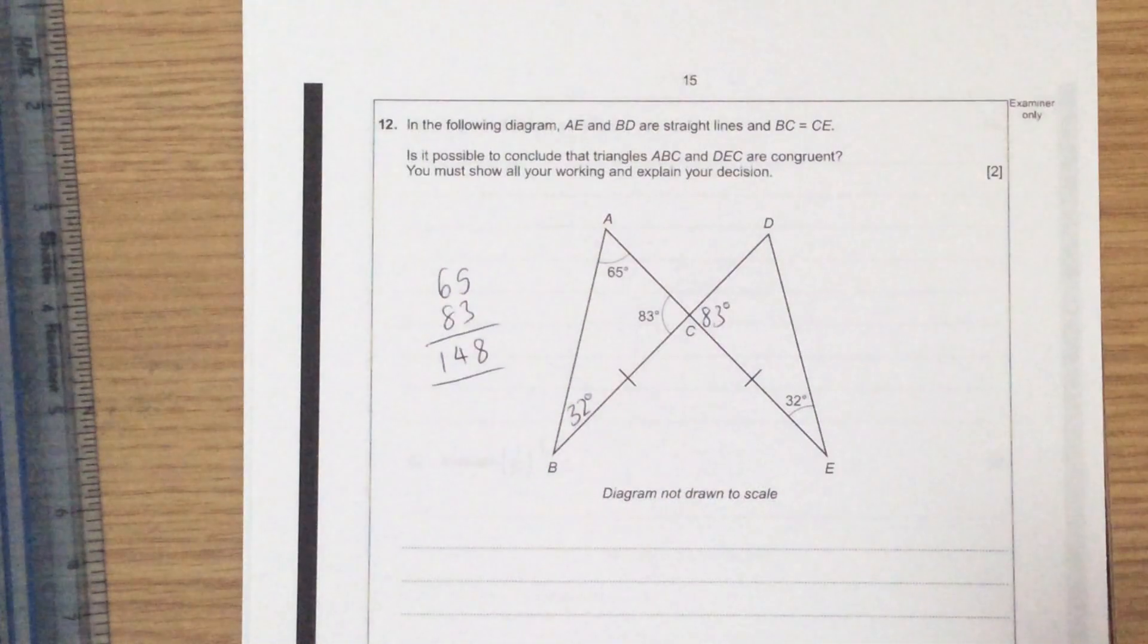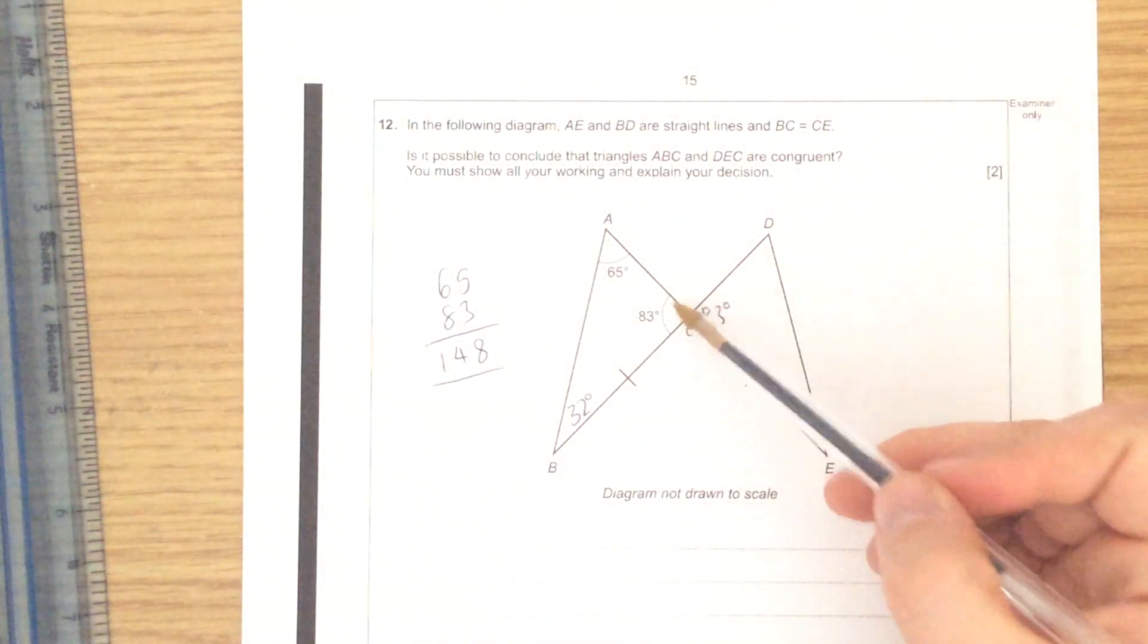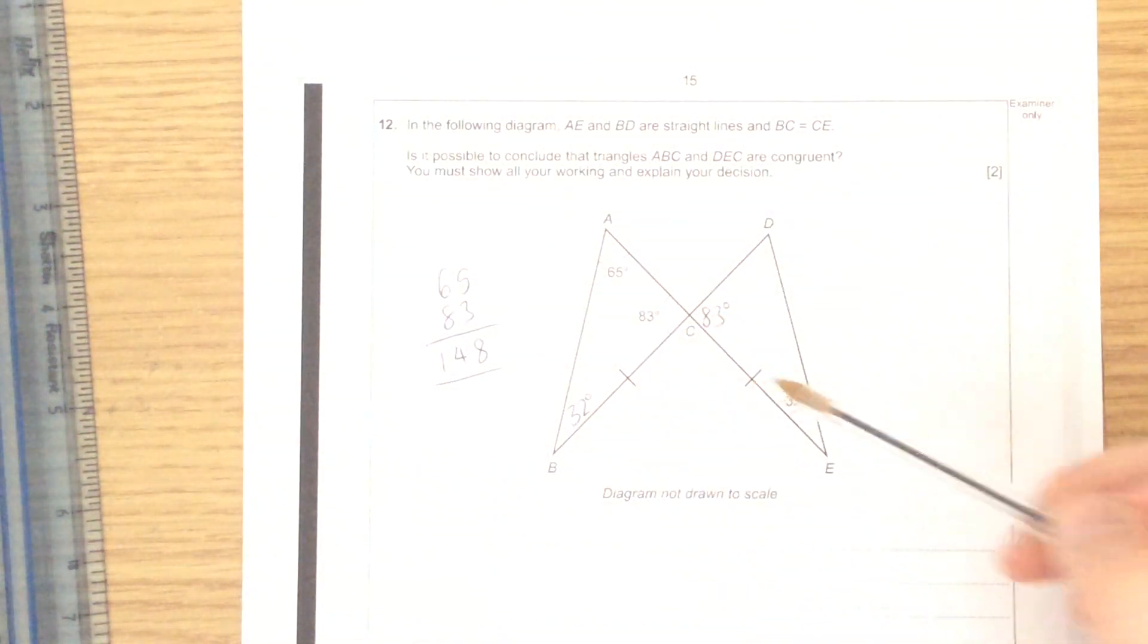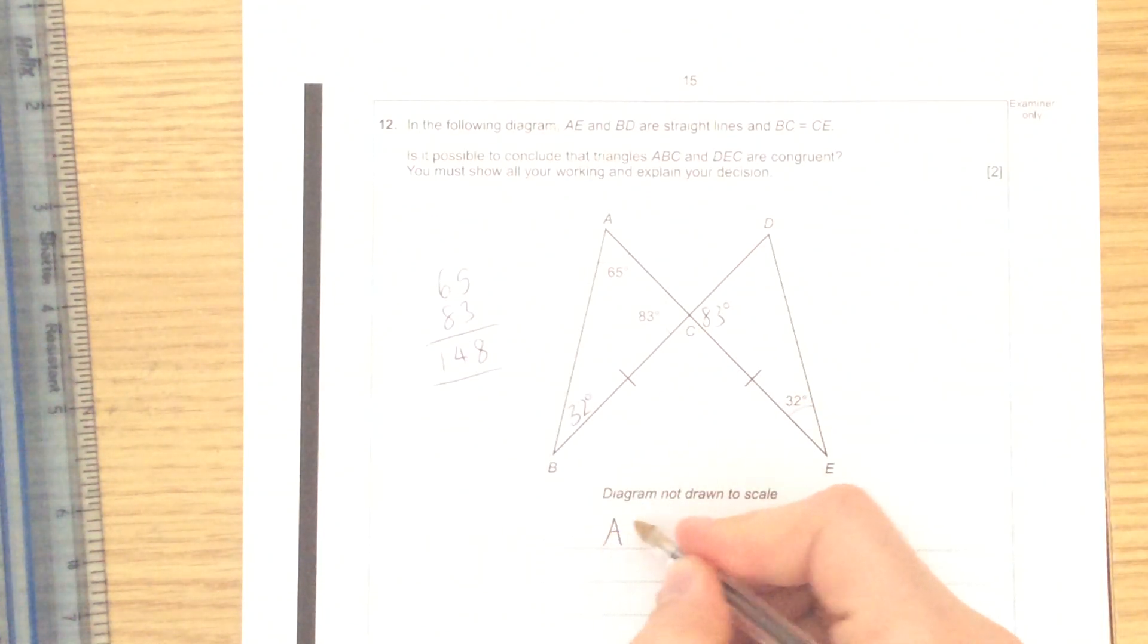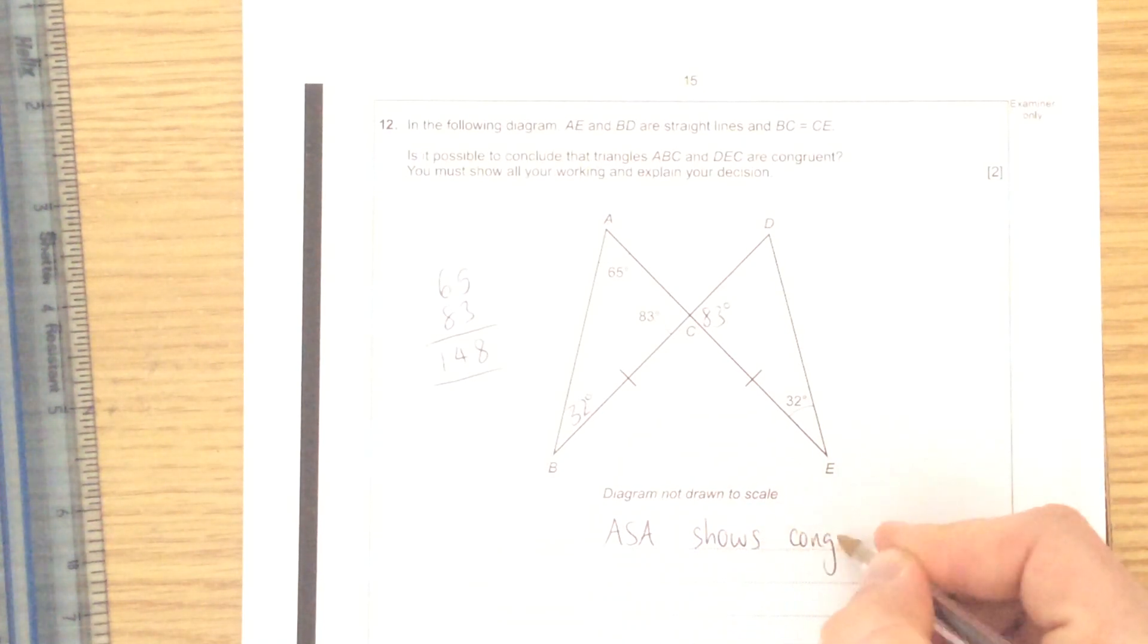I can now conclude that these triangles are congruent because I've got angle, side, angle in both triangles, so angle, side, angle shows the congruency in those two triangles.